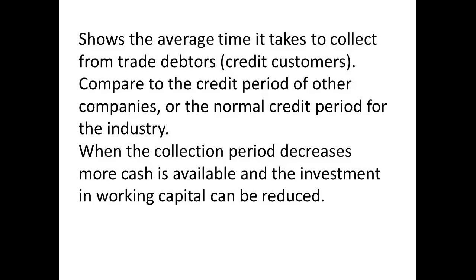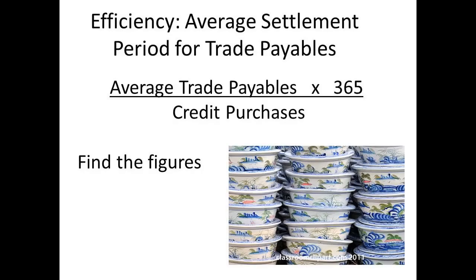The average time taken to collect monies from trade debtors is important because that figure represents idle capital. Decreasing the figure gives more money available for investment. Managers will want to compare this figure against other companies, particularly competitors. A similar measurement is the average settlement period for trade payables, calculated by dividing the average trade payables by total credit purchases and then multiplying by 365.